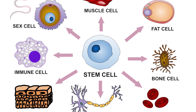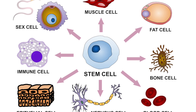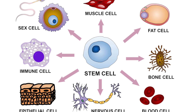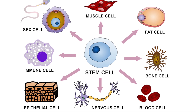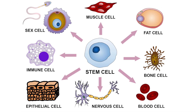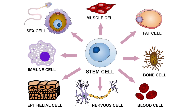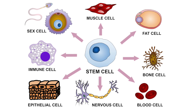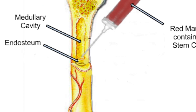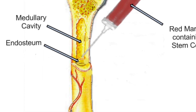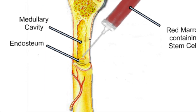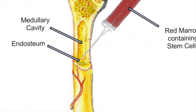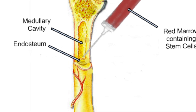Furthermore, stem cells can be taken from adult stem cells. However, there are also problems when taking them from adult stem cells, because there is a risk that the stem cells may be infected with viruses and these could be transferred.